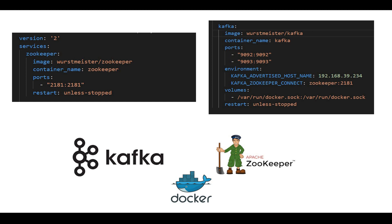The important part in the Kafka environment variables is the advertised host, where you need to set your host machine's IP address. I'll show you how to check your host IP. For the Kafka Zookeeper connect setting, I'm using 'zookeeper:2181' because I named the service 'zookeeper' — if you use a different service name or port, you need to update that here accordingly. This covers the overall YAML file — now let's see it in Visual Studio Code and run it.